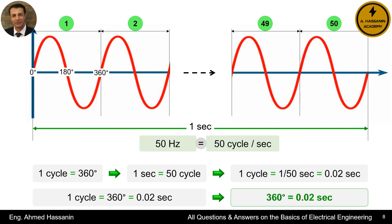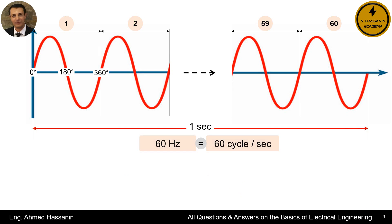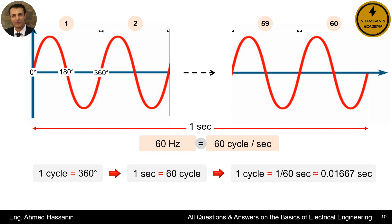In a system with a frequency of 50 Hz, 360 degrees corresponds to 0.02 seconds in real terms. Similarly, in a 60 Hz system, the rotor inside the synchronous generator must complete 60 cycles in one second to achieve that frequency. Therefore, 60 Hz means 60 cycles per second. Since one cycle equals 360 degrees and there are 60 cycles in one second, the duration of one cycle is equal to 1 divided by 60 seconds, which is approximately 0.01667 seconds.